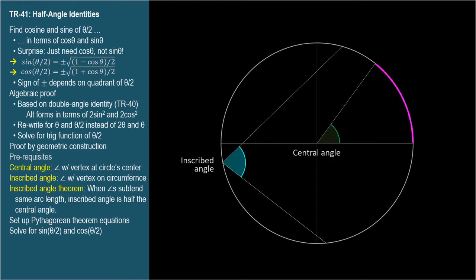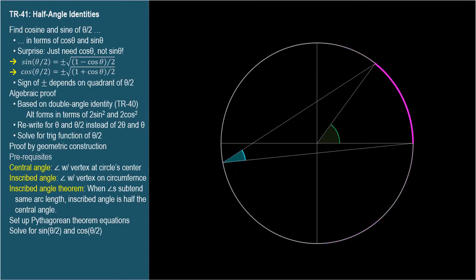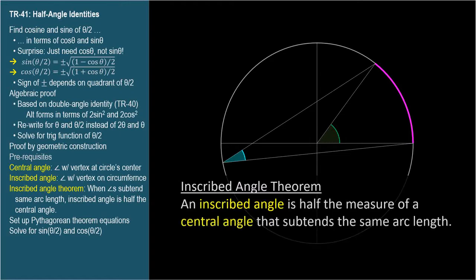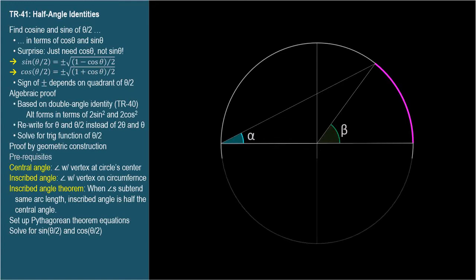When two angles subtend the same arc length, the inscribed angle theorem states that the inscribed angle is 1 half the central angle. So if the central angle is π over 3 radians (60 degrees), the inscribed angle is π over 6 radians (30 degrees). We'll prove this for the special case where the angle vertices are collinear with an endpoint of the subtended arc, since that's all we need for the half-angle identity. This triangle has two legs of length R (the radius), making it an isosceles triangle.